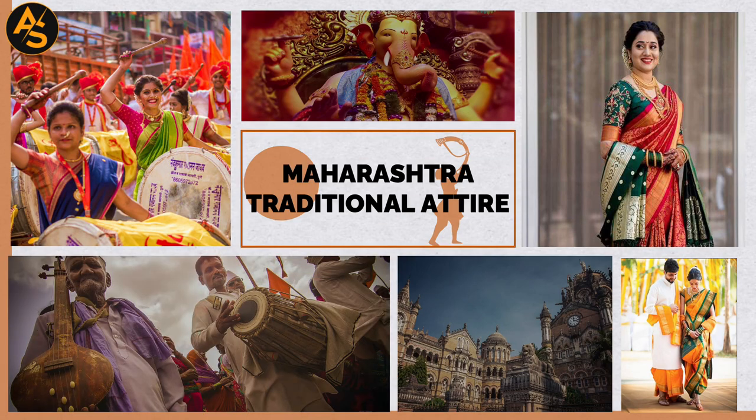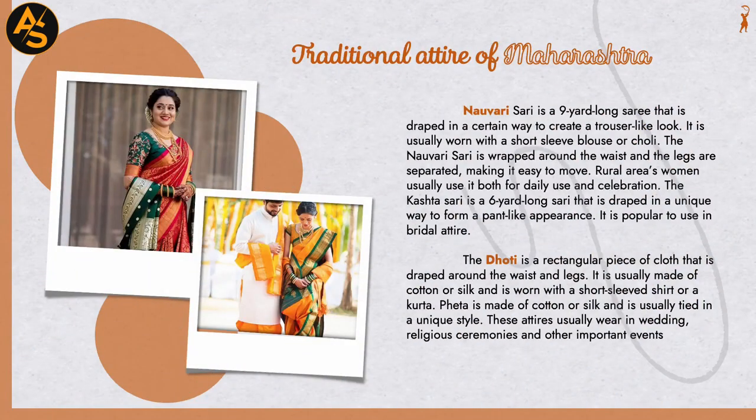Traditional Attire of Maharashtra. The Nauvari saree is a nine-yard-long saree draped in a way to create a trouser-like look, usually worn with a short-sleeved blouse. The Nauvari saree is wrapped around the waist with the legs separated, making it easy to move. Women in rural areas use it both for daily use and celebration. The Kasta saree is a six-yard-long saree draped in a unique way to form a dhoti-like appearance and is popular in bridal attire.